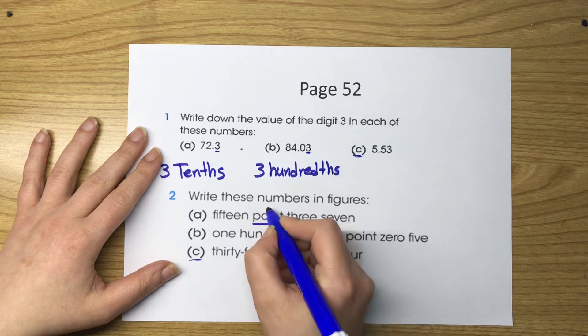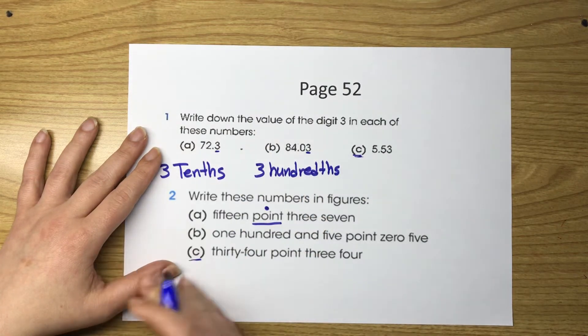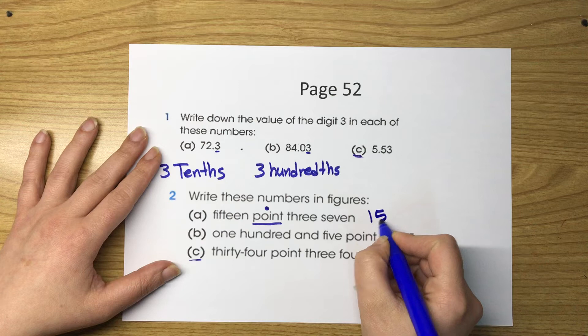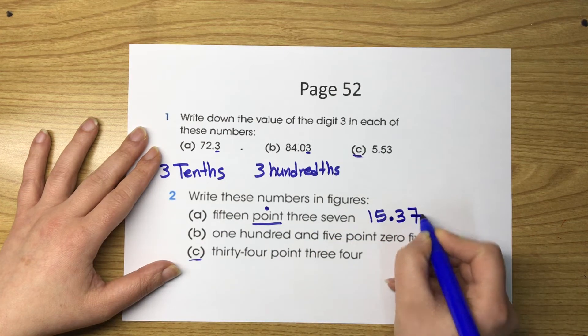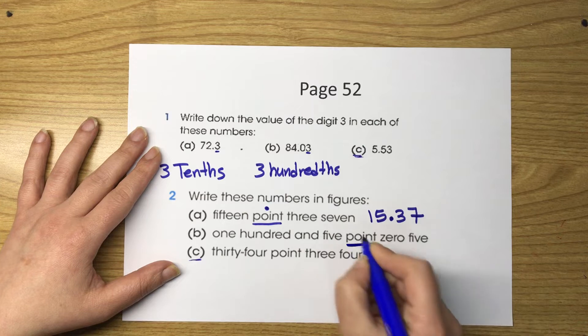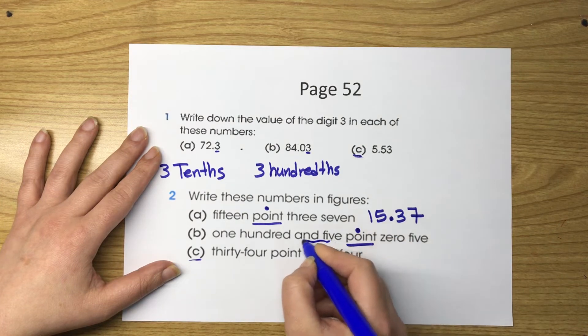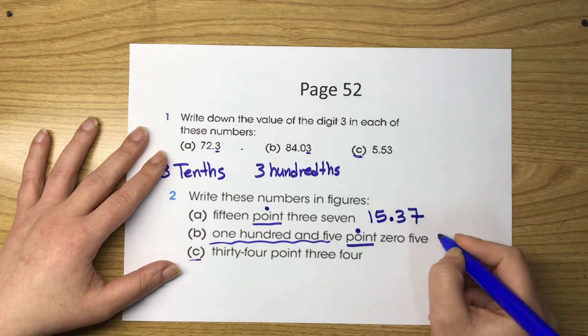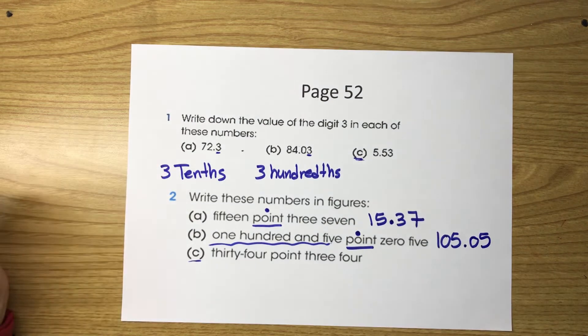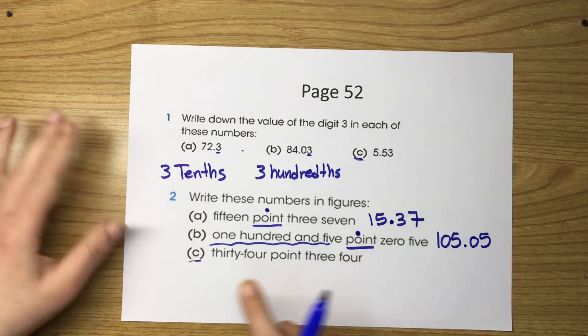Fifteen point — the point separates the whole numbers from the decimal places — so fifteen, point three seven. Done. B: one hundred and five point — you have to write down this first part — one hundred and five point zero five. C is your homework.